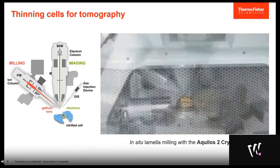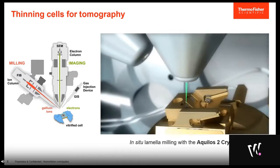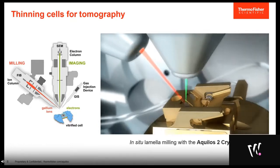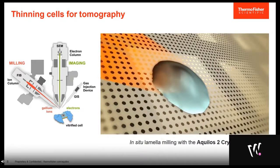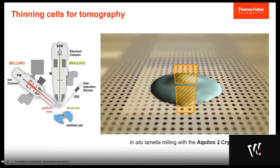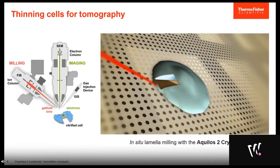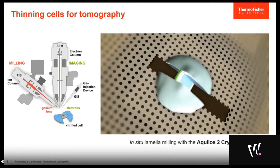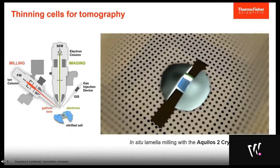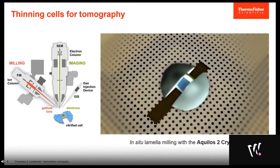Here we go into the system. This is a cryo specimen loaded onto the cryo stage. We use the electron beam to image the sample as in a scanning electron microscope, and then use the ion beam to manipulate and remove areas of interest. The ion beam removes material from the cell, and what is left behind is a thin lamella still connected to the sides of the cell. By this process we create a sample that is electron-transparent, allowing us to look into the interior of a frozen hydrated cell.